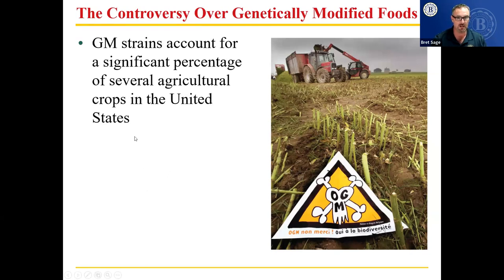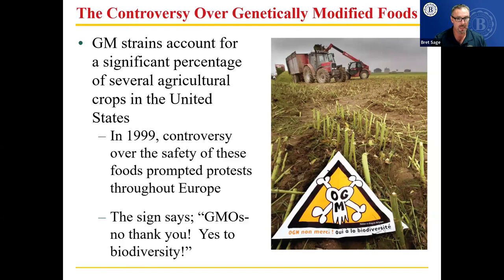Genetically modified strains account for a significant percentage of several agricultural crops. In the United States, about 50% of corn and more than three quarters of soybeans are genetically modified. In 1999, controversy over the safety of these foods prompted protests throughout Europe, with signs saying 'GMOs no thank you, yes to biodiversity.' Europe pretty much resists genetically modified organisms, while the United States embraces it — that's part of the reason we don't ship a lot of corn and soybeans to Europe.